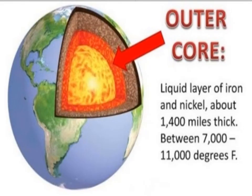The outer core is a liquid layer of iron and nickel. Its thickness is about 1,400 miles, and its temperature ranges between 7,000 to 11,000 degrees Fahrenheit.